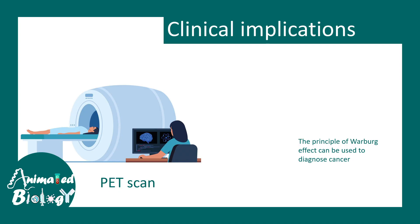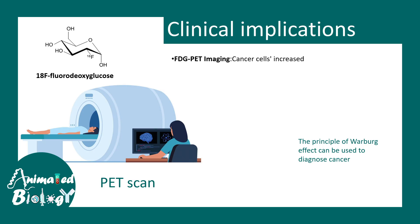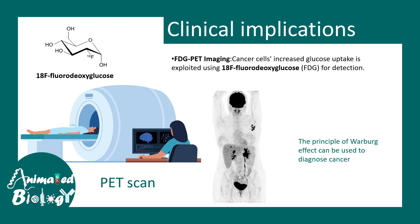The principle behind the Warburg effect is actually used to image cancer progression in the body. PET scans work on this principle: 18F-fluorodeoxyglucose (FDG) is used as a tracer. FDG PET imaging is based on the principle that cancer cells take up a large amount of glucose, and this labeled glucose can be monitored in the imaging system.